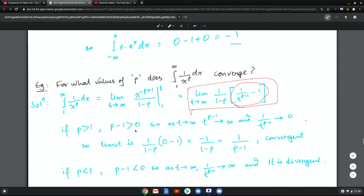Now let's analyze this term inside over here. Now if p is more than 1, then p minus 1 is positive, so as t goes to infinity, t raised to p minus 1 goes to infinity because it's positive power. Now if a number goes to infinity then its reciprocal goes to 0. So this limit is 1 over p minus 1 which is finite, so it is convergent when p is more than 1.